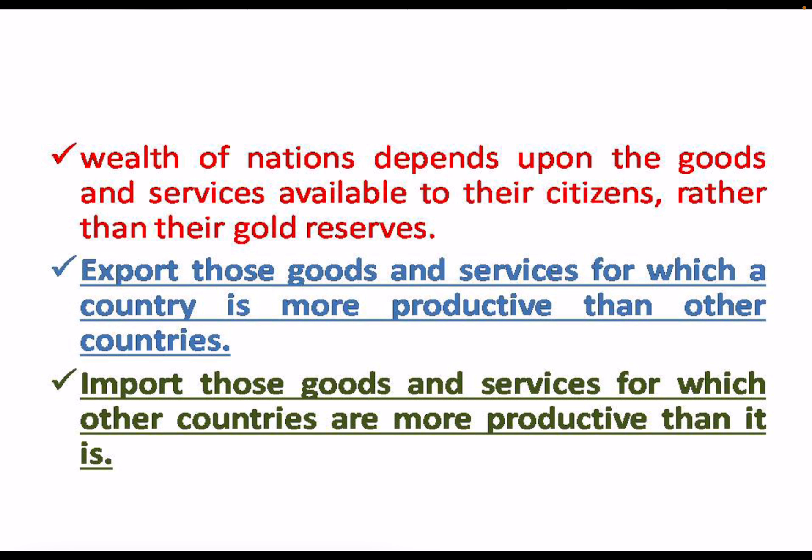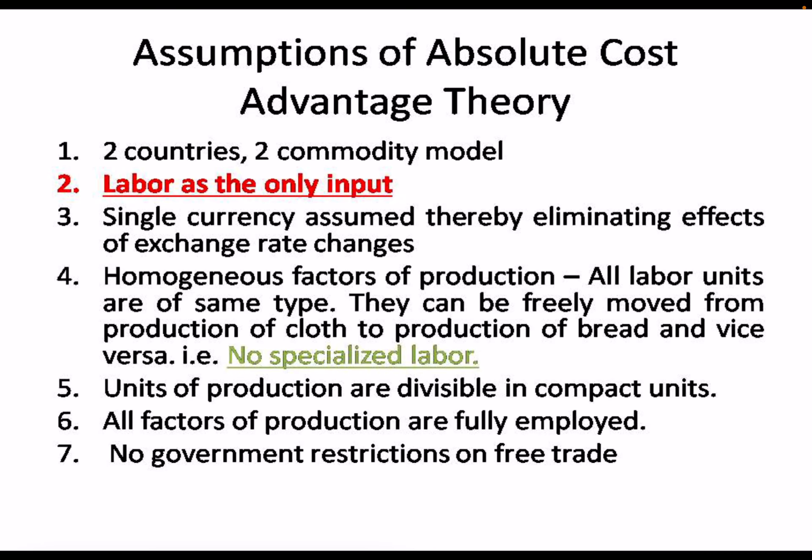There are some assumptions in absolute cost advantage theory. It is a two-by-two-by-one model: two countries, two commodities, and one factor of production, which is labor.